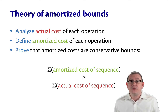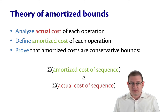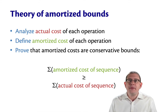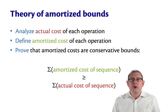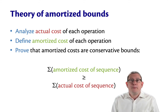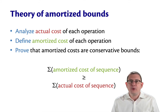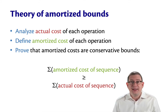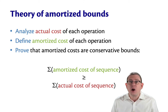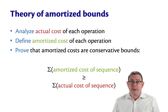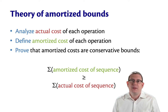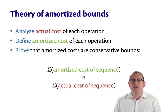We're still interested in figuring out what the actual running time of each operation is. But then on top of that, we layer the notion of a bookkeeping trick, essentially. We define an amortized cost for each operation. We get to pick that — it comes out of our own imagination of what we want that amortized cost to be. But we have to be right about it.